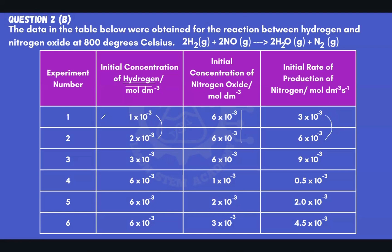Looking at experiments 1 and 2, the concentration of hydrogen has effectively doubled — I went from 1×10⁻³ to 2×10⁻³, so I multiplied it by 2. When I did that while keeping nitrogen oxide constant, the rate of production of nitrogen also doubled. Because whatever I did to the concentration of hydrogen was reflected exactly in the rate, we say that's first order. So the reaction is first order with respect to hydrogen, meaning I would put a power of 1 beside H₂ in the rate law.